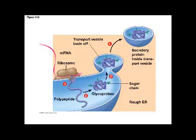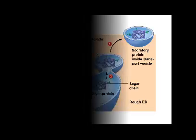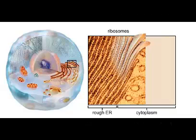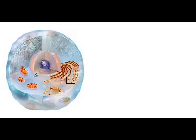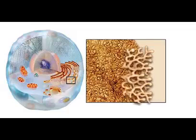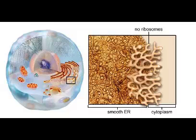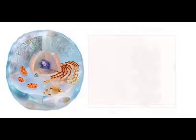Once the polypeptide is made, it is modified as it travels through the channels of the rough endoplasmic reticulum. Ultimately, the protein is packaged into a transport vesicle — a membrane sac off of the rough ER that will protect the molecule. Other polypeptides made in the rough ER will move into the smooth endoplasmic reticulum, where they will most likely become enzymes acting in the smooth ER, or be released into transport vesicles that go outside of the cell.